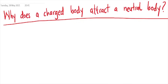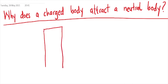So why does a charged body attract a neutral body? We are going to explain this right now. Let's draw these two bodies. We have a charged body here — let's say that this body is positively charged. By positively charged, it means that it has more positives than negatives, so I'm only going to indicate the positives.